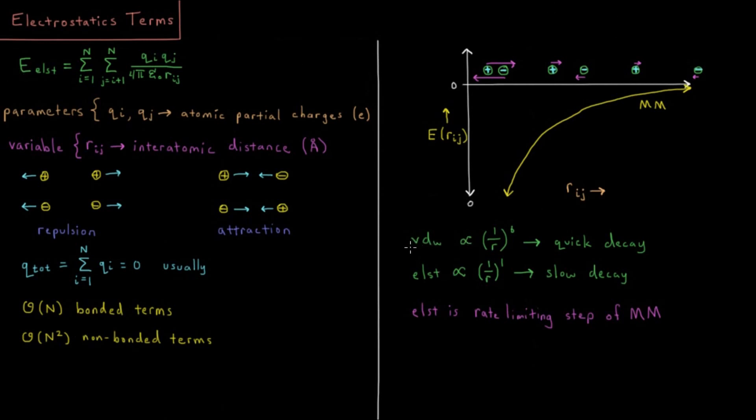If we look at the non-bonded terms we have, we have a van der Waals term which depended on 1 over interatomic distance to the 6th and to the 12th. But 1 over r to the 6th is slower decaying, so that's what's important here. The van der Waals term decays as 1 over r to the 6th as our distance is increasing. That's going to decay towards 0 very quickly.